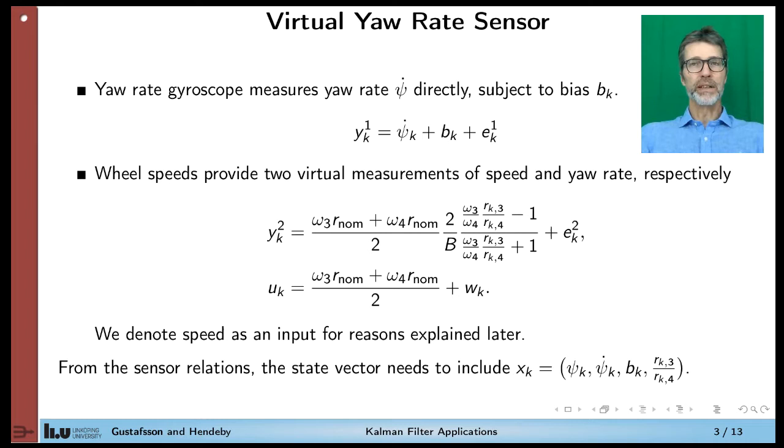So the core idea here is to combine these two gyro information sources in a Kalman filter and see if we can eliminate some of the drift over time. The wheel speed virtual yaw rate sensor is not drift free either, because you don't have exactly the same wheel radius. And this little relative difference in wheel radius will turn up in the virtual yaw rate sensor.